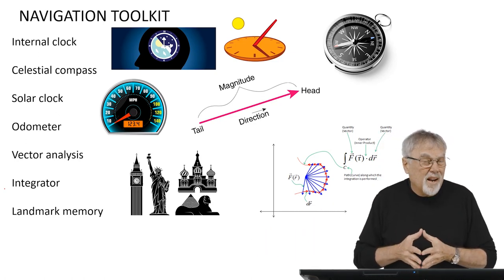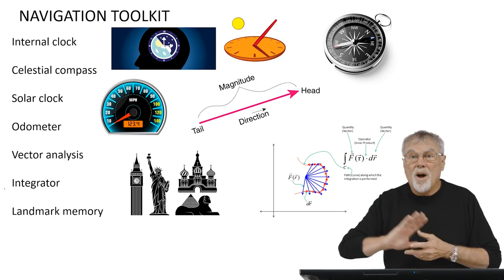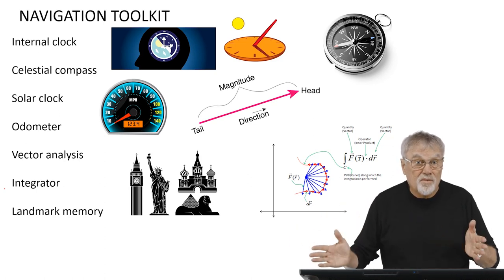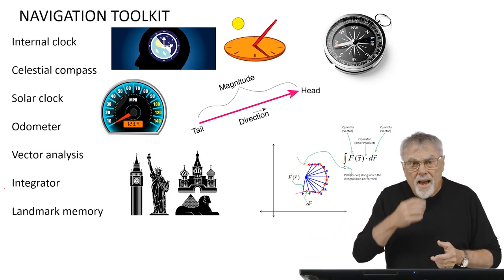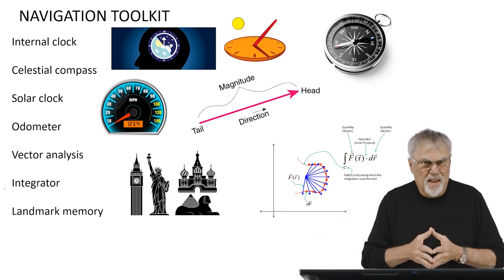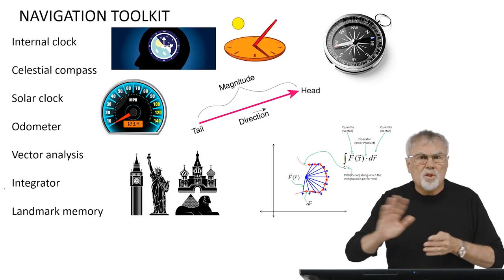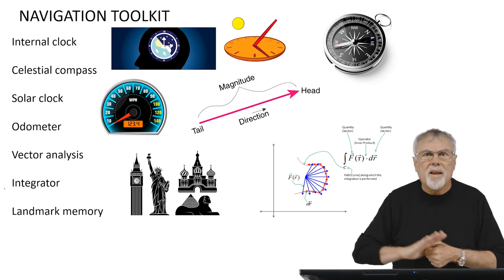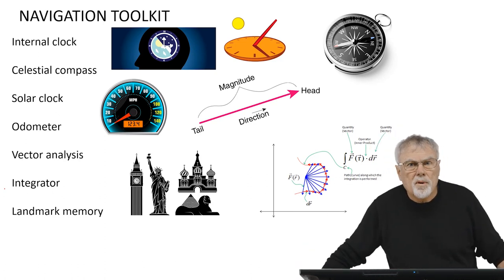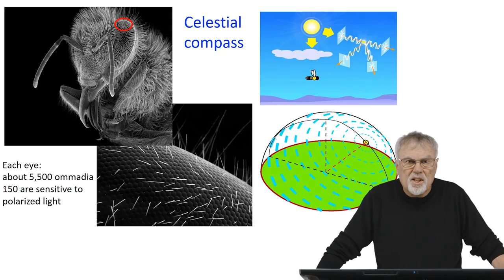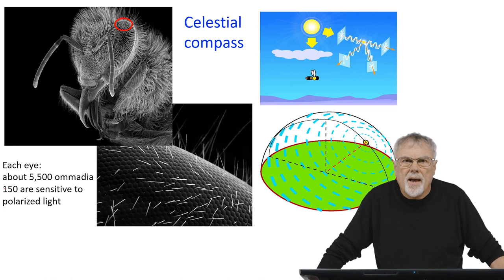They have an odometer. They have a mechanism where they can actually measure distances to resources. They're able to do vector analysis, so they can determine what direction they're going in relative to the sun or relative to landmarks. They have an integrator, a vector integrator. They can integrate different vectors and then get one solution with respect to a straight line direction, and they have an incredible ability to remember landmarks.